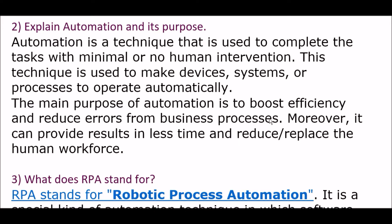The next question: explain automation and its purpose. Automation is a technique used to complete tasks with minimal or no human intervention. These techniques are used to make devices, systems, or processes operate automatically. The main purpose of automation is to boost efficiency and reduce errors from business processes.